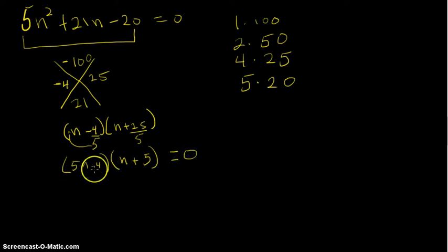The question is, does this give us the original problem? Let's see. 5 times n is 5n squared, 5 times 5 is 25n, take away 4 times n, that gives us 21n, and then minus 4 times 5 is minus 20, which works.